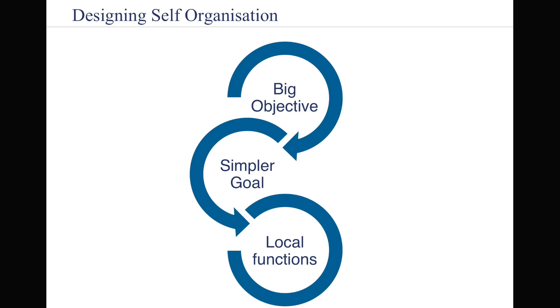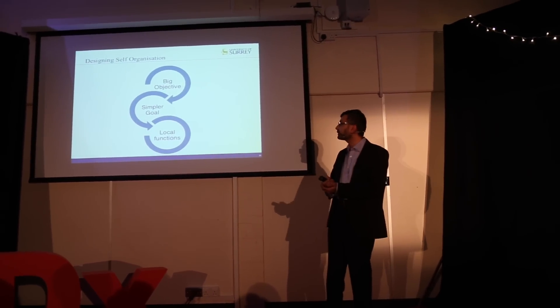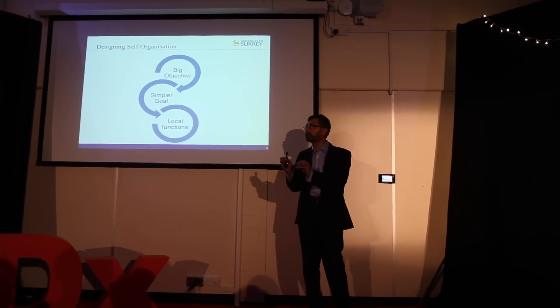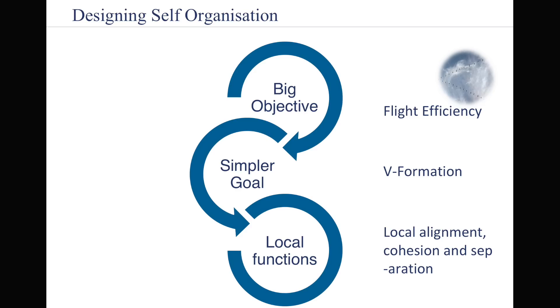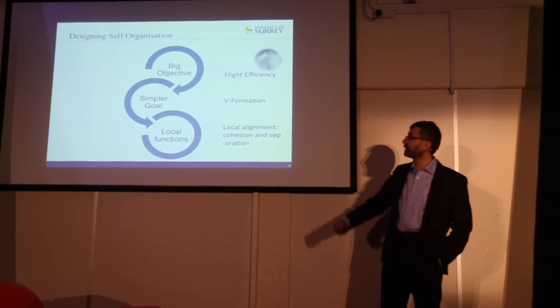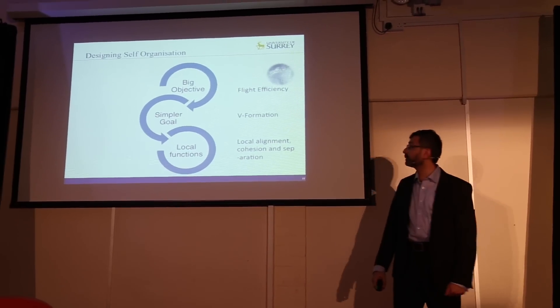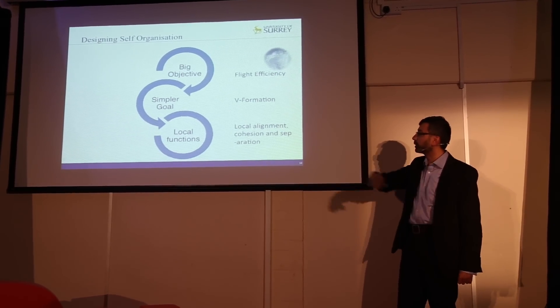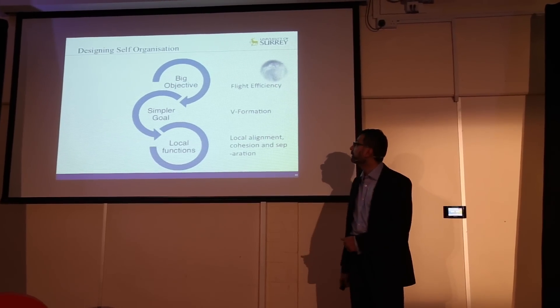So how this design works? We start with a big objective. We try to identify a simpler goal which supports this big objective and then we try to identify some local distributed functions that each individual component can do in order to achieve the simpler goal and in turn that big objective. In the example of this flock of cranes, the big objective was to improve flight efficiency. The simpler goal that they designed for themselves was to keep a V formation because it can be shown that this V formation improves the flight efficiency by 70%. How do they maintain this V formation? By three simple operations that each crane does locally: maintain a cohesion, a specific separation and a specific alignment in their flight.